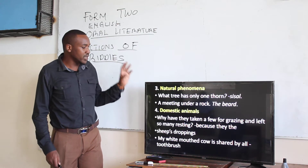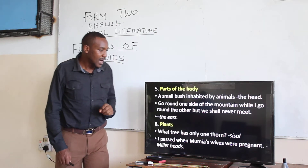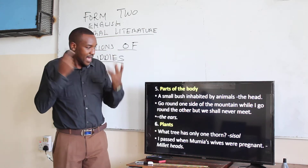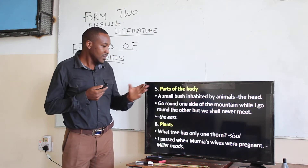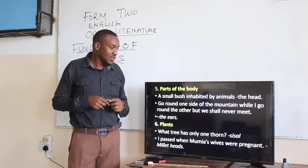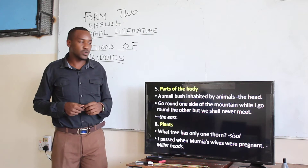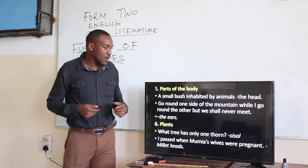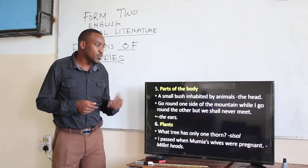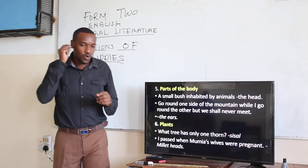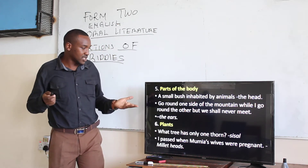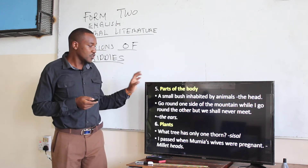Then we have riddles that involve parts of the body. Example: 'A small bush inhabited by animals' — the head has so many lice; the hair is the small bush inhabited by the animals. And then: 'I go around one side of the mountain, you go around the other, but we shall never meet' — those are the ears. So it's a type of riddle talking about various parts of the body.